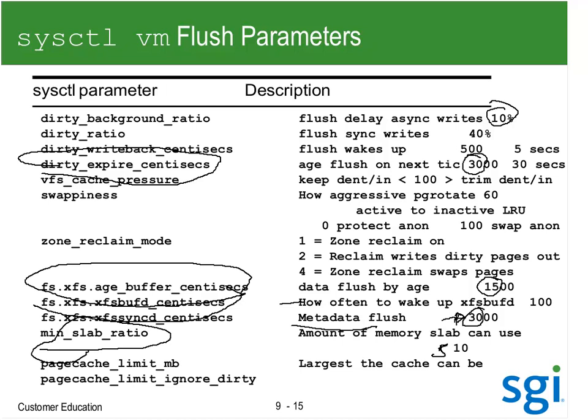The last thing is this page cache limit. Word of warning: it was actually twice the set value. So if I said I wanted to keep it at a gigabyte, it was actually doing it to 2 gigabyte. I want to test that with the latest kernel. There's also a page cache limit option that says don't count the dirty in that limit, so the clean can still have a limit of its own without somebody polluting my system with dirty and taking half the memory.